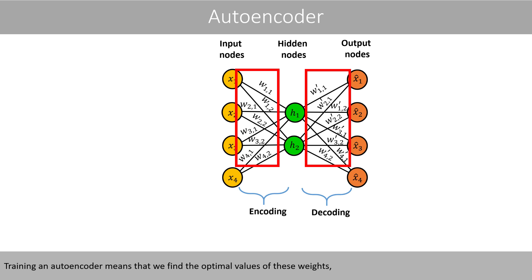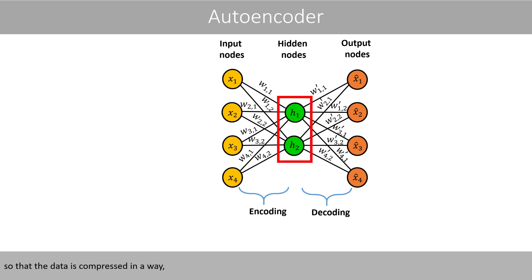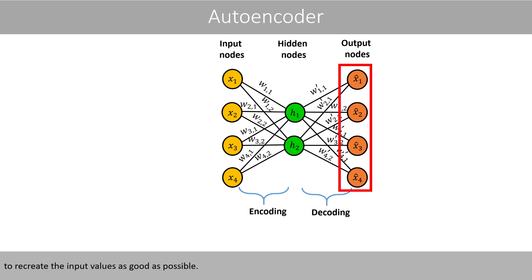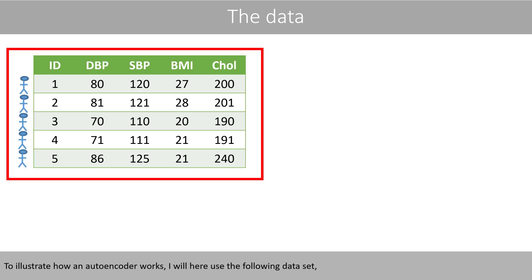Training an autoencoder means that we find the optimal values of these weights, so that the data is compressed in a way to recreate the input values as good as possible.